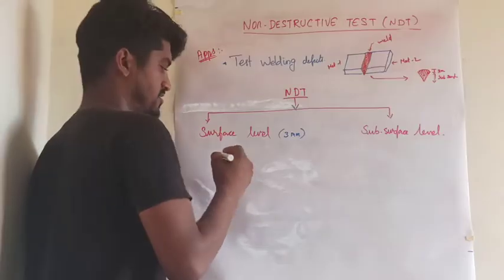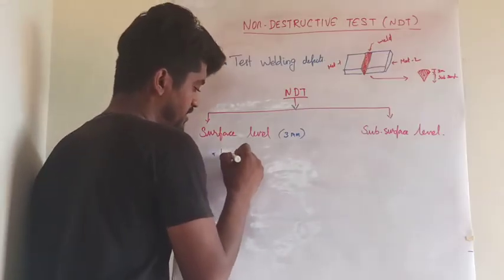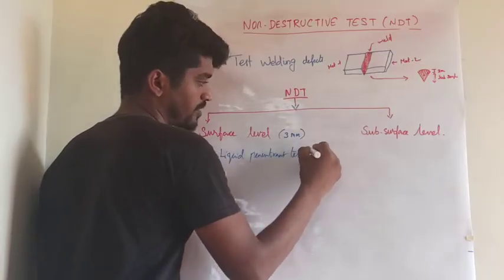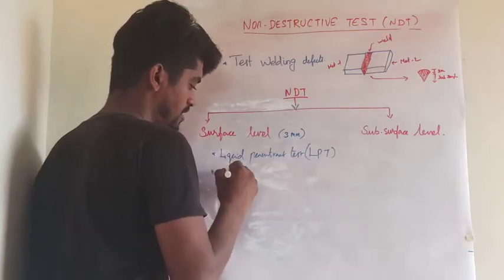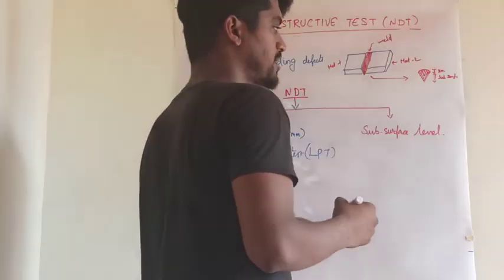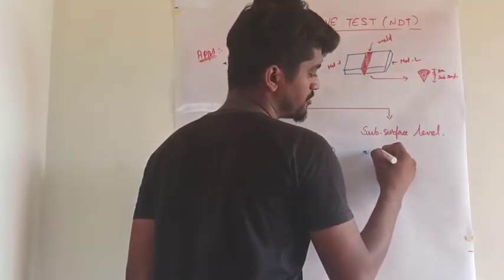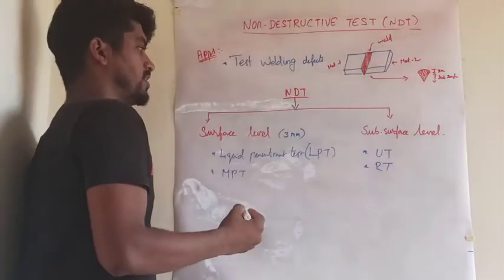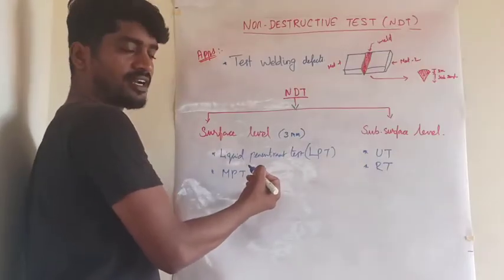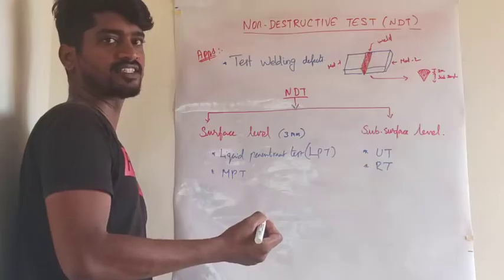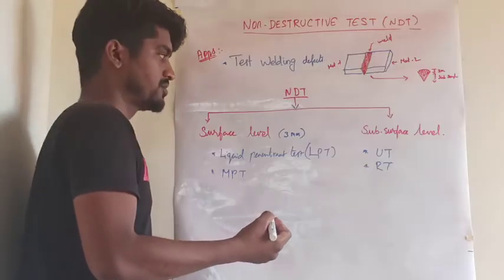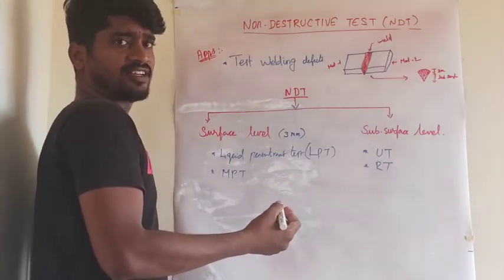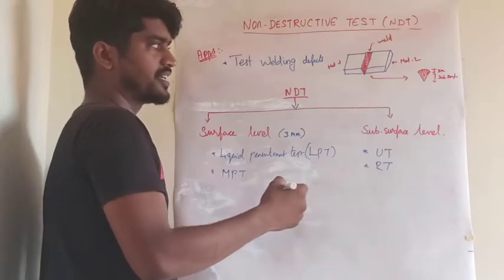In surface level detection, we find defects up to 3mm from the surface, using two methods: liquid penetrant test (LPT) and magnetic particle test. In subsurface level, we find defects wherever they occur inside the welded area, mainly using ultrasonic test and radiography test.